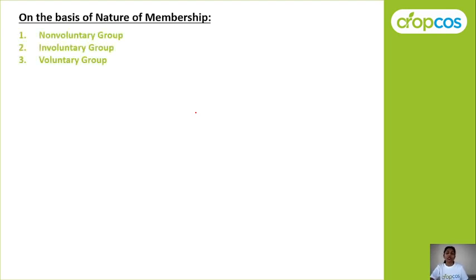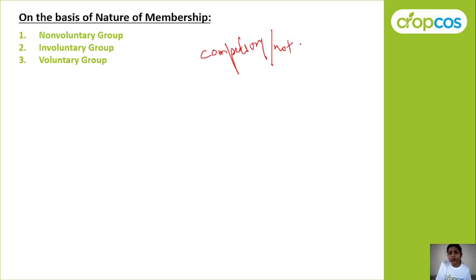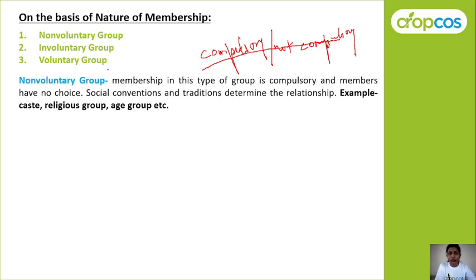Next is classification on the basis of nature of membership. One important point to remember is whether the membership is compulsory or not compulsory. On the basis of nature of membership, the group is divided into non-voluntary group, involuntary group, and voluntary group. In a non-voluntary group, the membership is compulsory — you have to be a part of that group; members have no choice. Members must compulsorily be part of that group and follow all social rules, norms, traditions, and conventions.